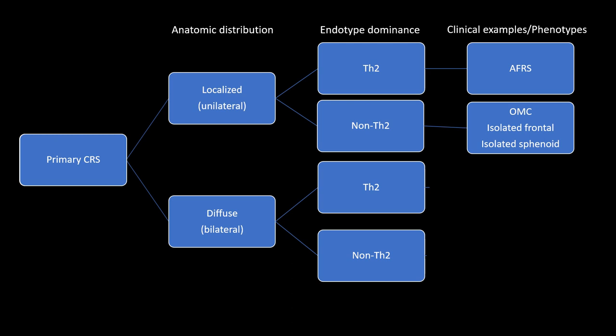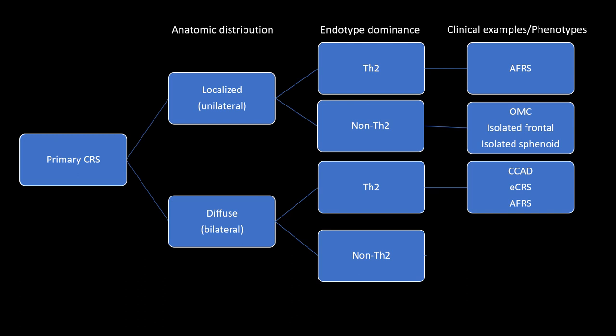Moving on to the diffuse group — these are patients who generally have bilateral disease. Once again, diffuse does not mean pan-sinusitis where everything is grayed out; it just means that the process doesn't restrict itself to known anatomical functional groups in the sinus. The Th2 conditions in this group are really these three main entities.